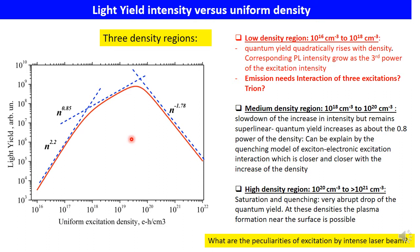The linear parts of these curves define three characteristic density regions. At low density from 10^16 to 10^18 per cm³, the quantum yield rises quadratically with density, and the corresponding photoluminescence intensity grows at the third power of the excitation density. This unexpected behavior may mean that the emission requires interaction of three excitations, as a hypothesis, like a triexciton state. At medium density from 10^18 to 10^20 per cm³, there is a slowdown of the increase in intensity but it remains super-linear. The quantum yield increases at about 0.8 power of the density, which can be explained by quenching of exciton-electronic excitation interaction that becomes closer and closer with increasing density.